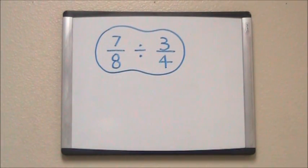We can use cross-canceling when we're dividing fractions. In the problem 7 eighths divided by 3 fourths, it looks like we cannot cross-cancel because there are no common factors between one of the numerators and one of the denominators.